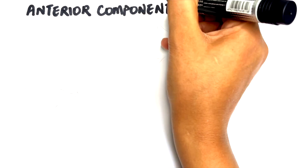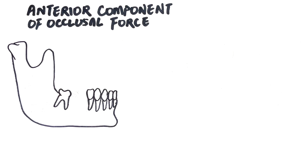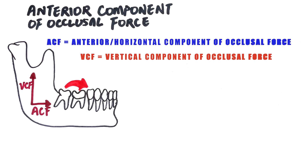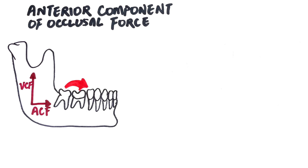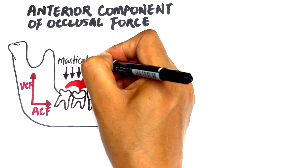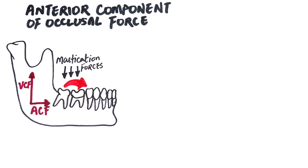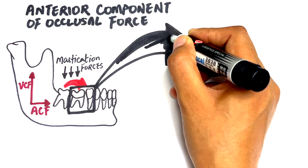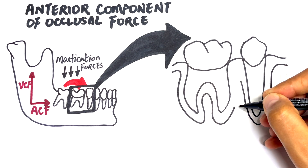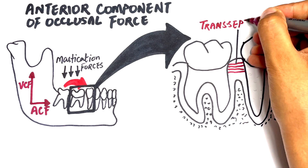The occlusal force has two components, one of which is the anterior or horizontal component. The teeth in the jaws are not straight; instead, they are mostly inclined mesially, and that is the reason that during clenching or mastication forces, teeth always tend to move towards the mesial. However, studies show that in the absence of occlusal forces, when opposing teeth are removed, the mesial migration of the teeth is slowed down. This indicates the presence of some other force from the PDL. The contraction of transseptal fibers, which is one of the PDL fibers, is considered an important factor in the mesial drifting of teeth.